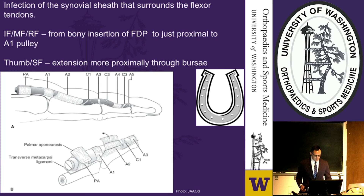To start with a brief anatomy overview: the flexor tendons are composed of both retinacular and synovial tissue, and they form a closed anatomic space. The distal end of the flexor tendon terminates near the bony insertion of the FDP tendon, or at the bony insertion of the FDP tendon in the thumb. The proximal extents of the sheaths of the index, middle, and ring finger lie just proximal to the A1 pulleys.